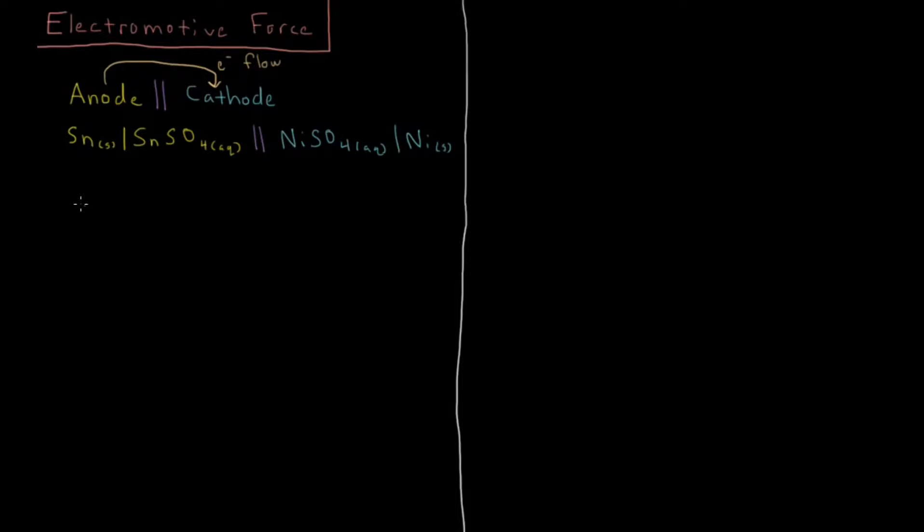So we know that if a reaction is spontaneous, then our delta G of reaction is less than zero. And we know that for our electrons, electrons flow from high voltage to low voltage.